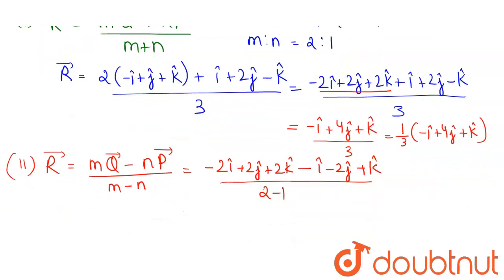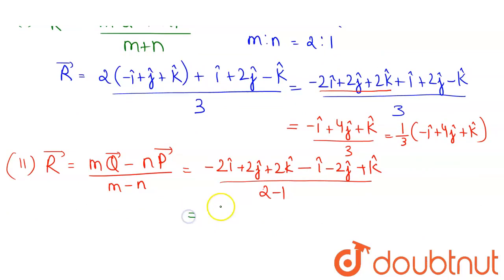So this equals minus 2I cap minus I cap will be minus 3I cap. 2J cap minus 2J cap, so this gets cancelled out. Now 2K cap plus K cap will be plus 3K cap. So this is our required position vector that divides the line segment P and Q externally.